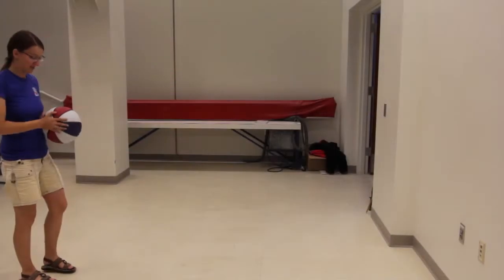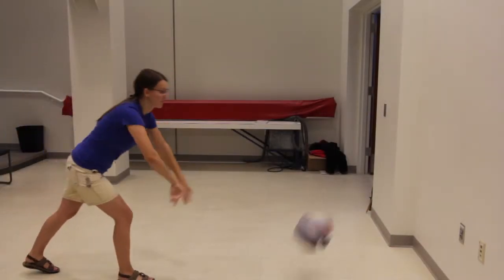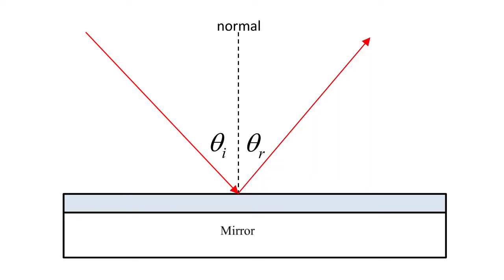When light reflects off of a flat surface, it is just like throwing a bounce pass in basketball. The ball comes up at the same angle that it took going down to the floor. With light, we call this the law of reflection.